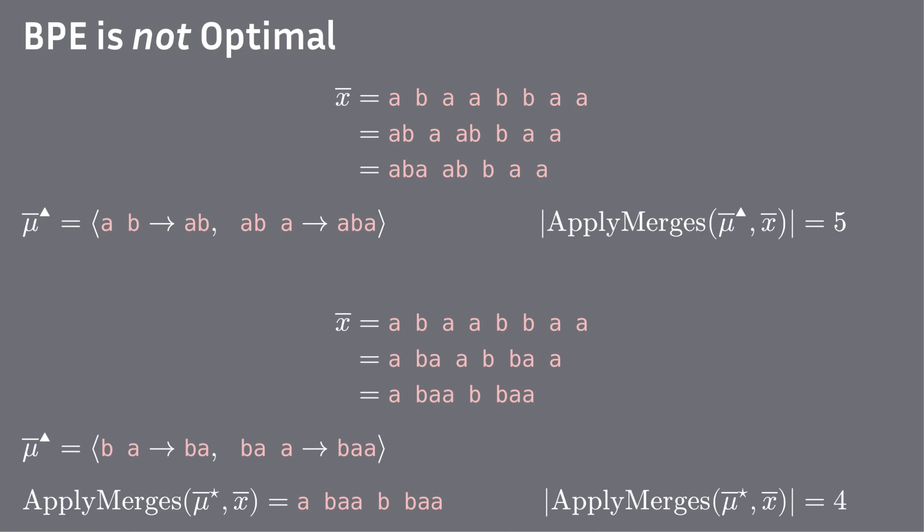However, if we were a bit smarter, we would merge B and A first, and then BA and A, resulting in a sequence of just four units. So in terms of compression, BPE does not guarantee the best merge sequence.